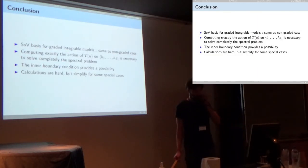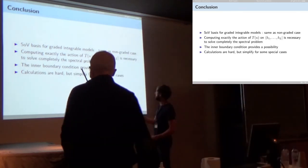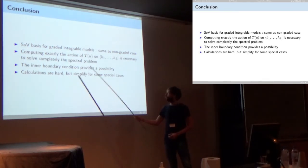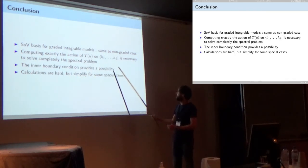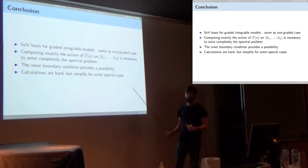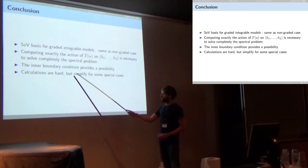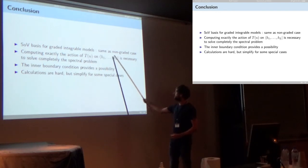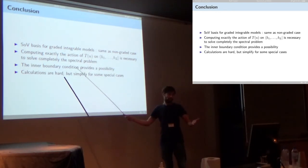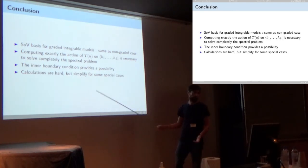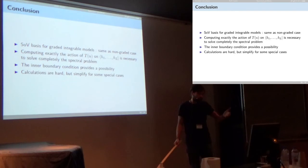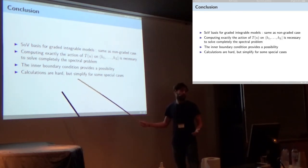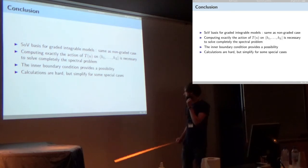To conclude: we have a separated basis for a graded integrable model, constructed exactly as in the non-graded case. Computing exactly the action of the transfer matrix in this basis allows us to solve the spectral problem completely — both completeness and the characterization of all eigenstates. The inner boundary condition from representation theory of the underlying superalgebra is what provides the closure relation needed. Calculations are hard in the general case but simplify for special cases, such as GL(1|2) with a special twist. Future work aims to handle the GL(M|N) case without any restriction on the twist.